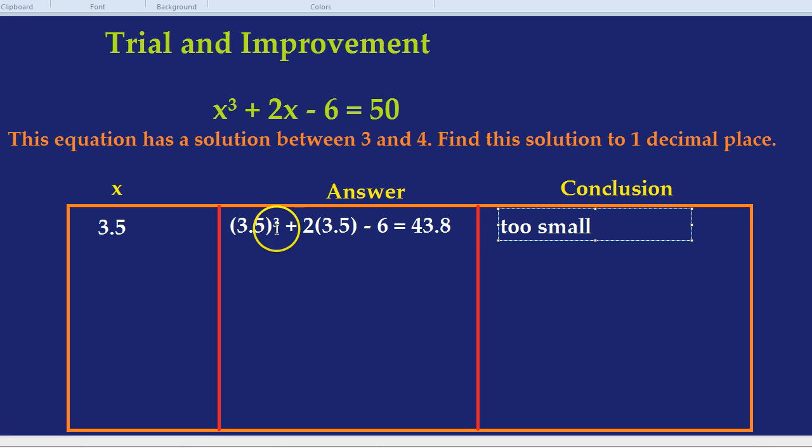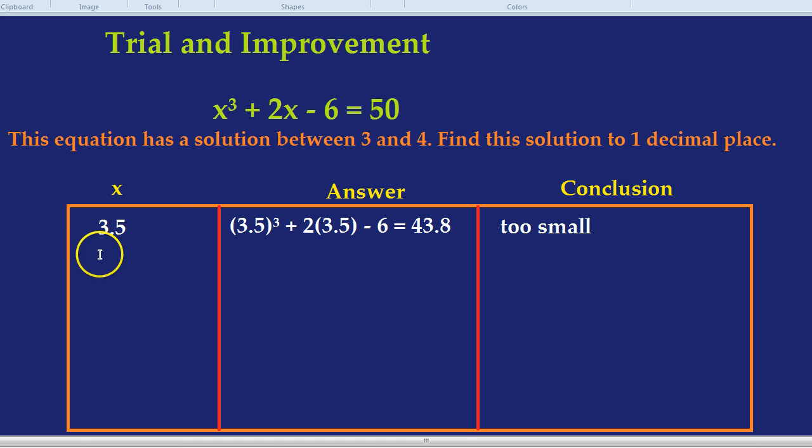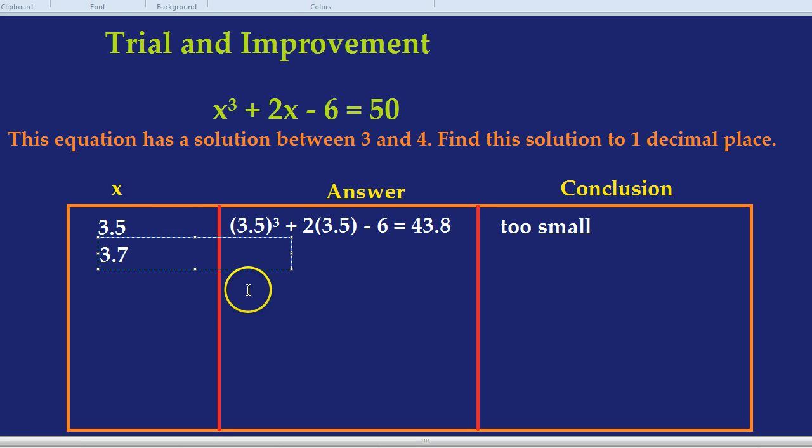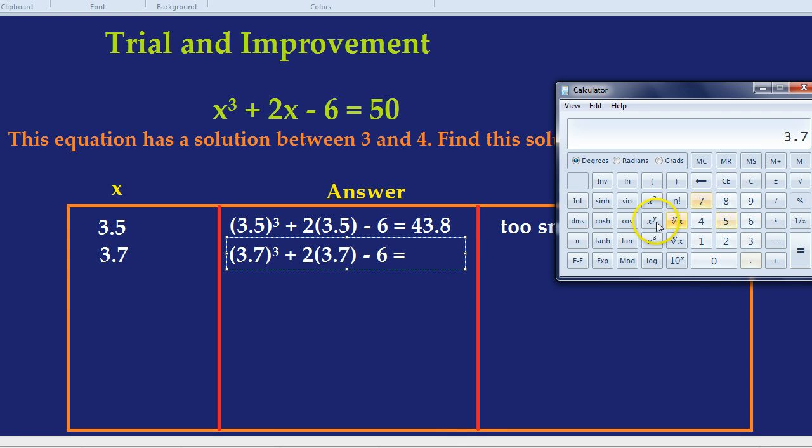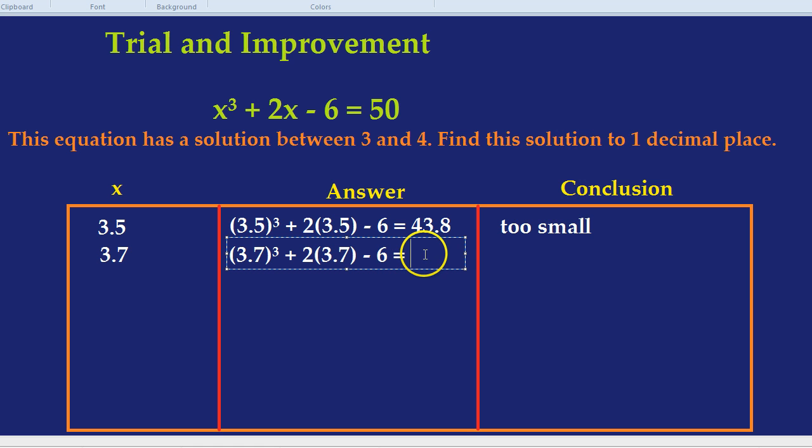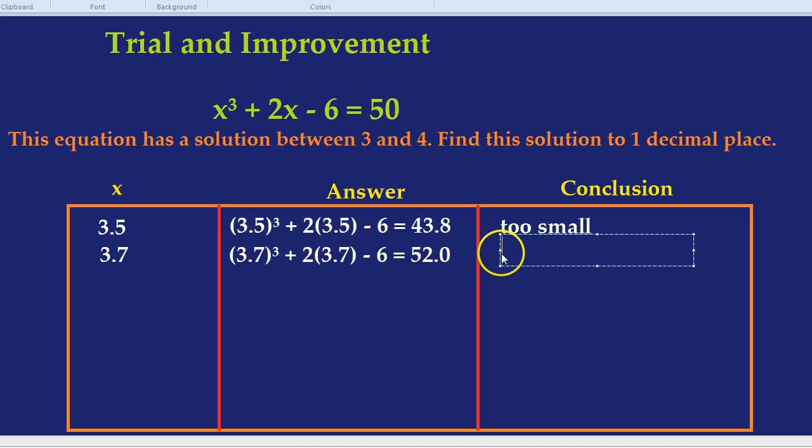If 3.5 was too small, let's try 3.7. How we do that? You might be able to guess. We're going to replace x with 3.7. So it's going to be 3.7 cubed plus 2 times 3.7 minus 6. And what does that equal? Let's do it in the calculator. 3.7 cubed plus 2 times 3.7, take away 6. That's 52.0. That is actually too big. Remember, we're aiming for 50, so 52 is too big. What do you reckon we should try next?